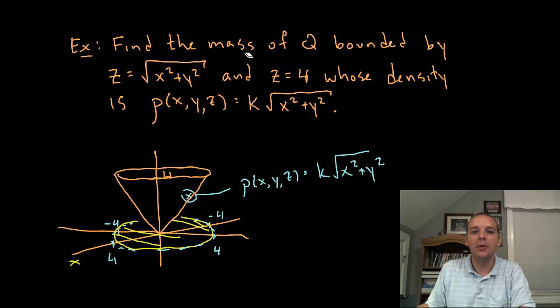But anyways to compute the mass of a solid you also need to know what its density is. Because the density of the solid affects its mass obviously. So the density function is given. It's rho of x, y, z equals k times the square root of x squared plus y squared. So you provided an x, y, z location and it will tell you what the density is at that x, y, z location.